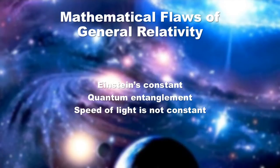Ask any astrophysicist. Here are three ways to invalidate general relativity: Einstein's constant, quantum entanglement, the speed of light that is not constant in value.